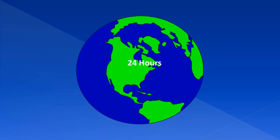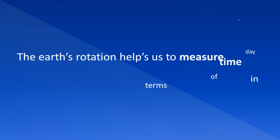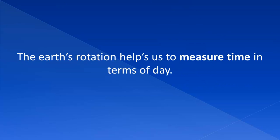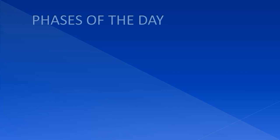It takes 24 hours for the Earth to rotate around itself. The Earth rotates from west to east. The Earth's rotation has enabled us to measure time in terms of a day. Phases of the day.